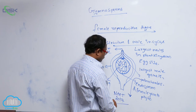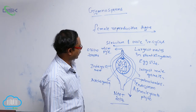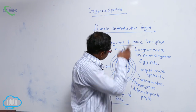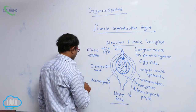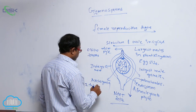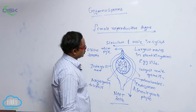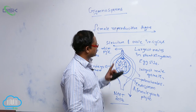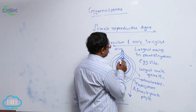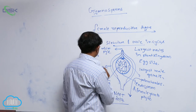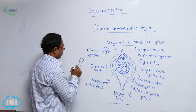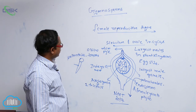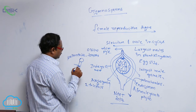The pollen chamber is an important objective question from 2017. Inside the endosperm, two to four pairs of archegonia are present. Each archegonium has a neck and venter, and inside there is only a single egg cell. When pollen grains fall on the pollen chamber, a pollen tube is produced.